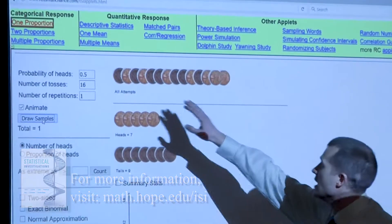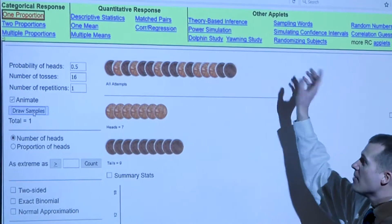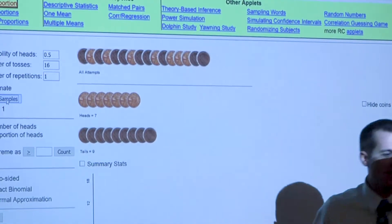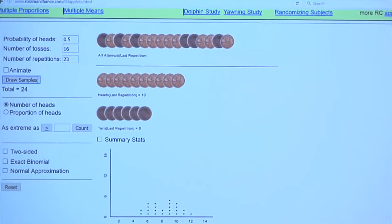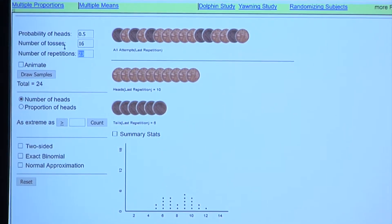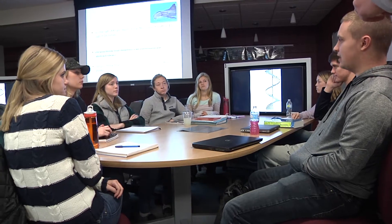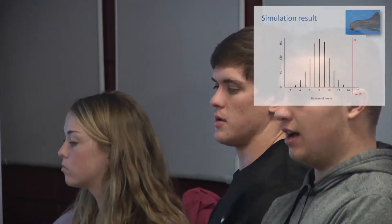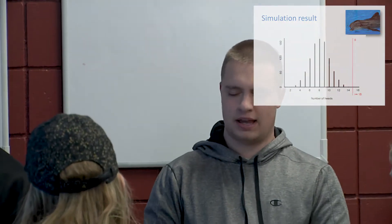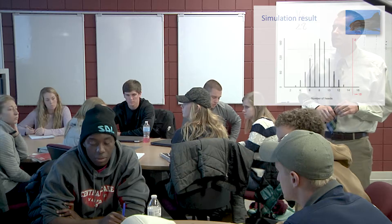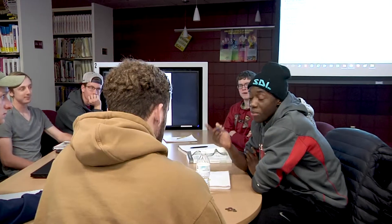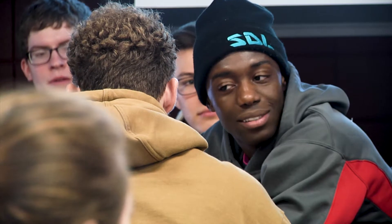We then transition from a tactile simulation to a computer-based simulation using free online applets, which scaffold the tactile learning experience by having a computer flip many, many sets of 16 coins. I think it's pretty clear that Doris can tell Buzz which button to press — 15 out of 16 times is pretty impressive. Ultimately, students' initial intuition is confirmed, and they can explain that 15 out of 16 is highly unlikely if Buzz is just guessing, because 15 out of 16 rarely occurs if Buzz is indeed guessing.